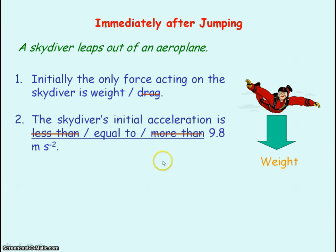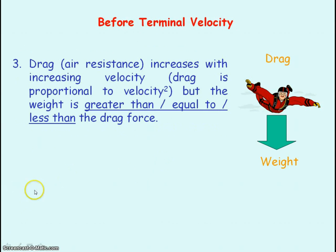As the skydiver accelerates, his velocity will be increasing. Drag is proportional to velocity squared, meaning if you double the velocity, the drag would increase by a factor of 4 — because 2 squared equals 4. So the drag force will increase with velocity.